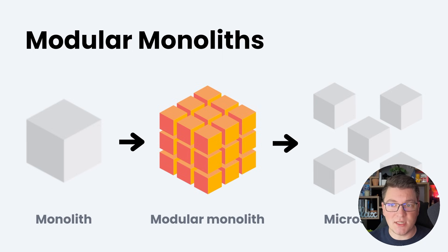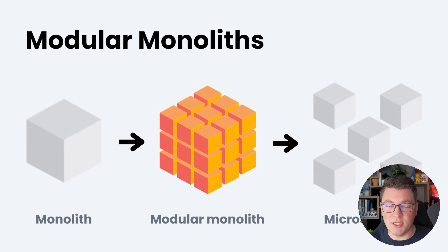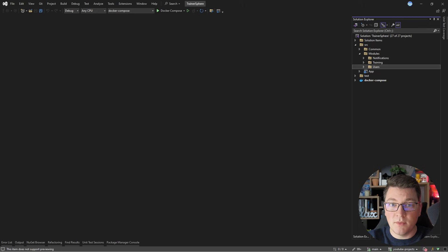So that was a high-level introduction to modular monoliths, where I discussed how they are different from a typical monolith and a microservices system. I also stressed the importance of logical isolation for the modules inside of a modular monolith, and I explained the concepts of a public API and data isolation for your modules. Now I want to show you what an implementation of a modular monolith would look like in .NET.